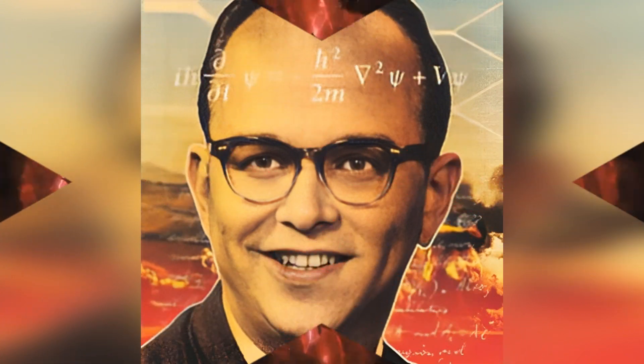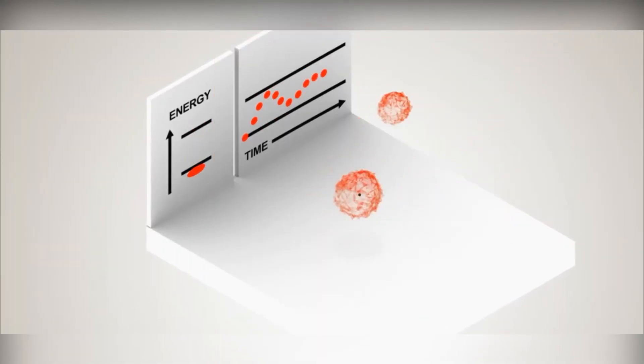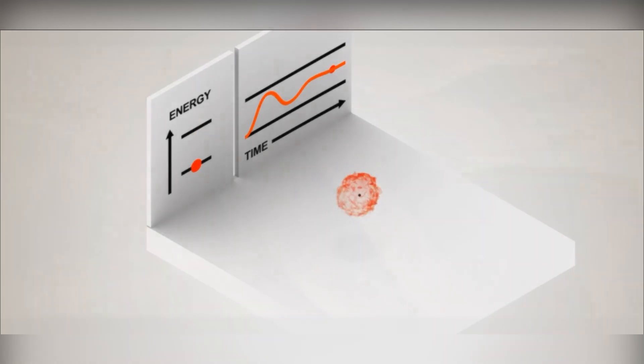This theory originated in the 1950s, thanks to the work of the brilliant physicist Hugh Everett III. At the heart of many worlds lies the notion of quantum superposition, where particles can exist in multiple states simultaneously until observed. Instead of collapsing into one outcome, as suggested by traditional quantum mechanics, many worlds suggests that all possible outcomes occur, each in its separate universe. This universe is only one of an infinite number.